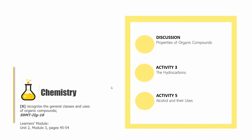This video is going to be a very thorough discussion of the following parts: a discussion on properties of organic compounds, Activity 3 on hydrocarbons, and then Activity 5 on alcohols and their uses. If you want to follow through with some sort of reading material, you can open your Learner's Module on Unit 2, Module 3, pages 45 to 54.